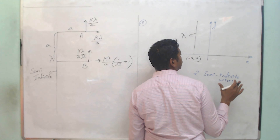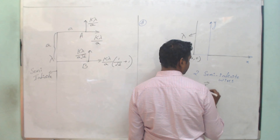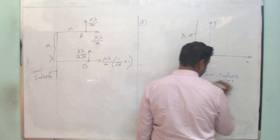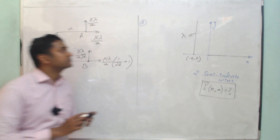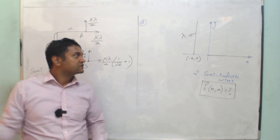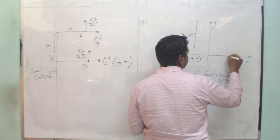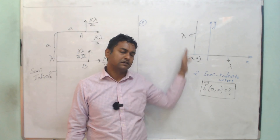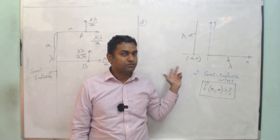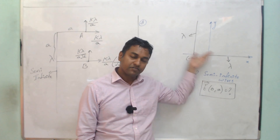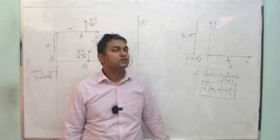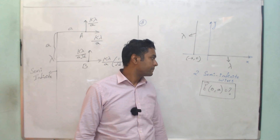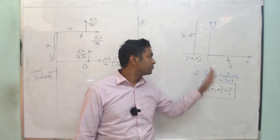Now, question number eight. Let us take an x-axis and y-axis. Two semi-infinite wires are placed as shown in the figure. The first semi-infinite wire is parallel to the y-axis, starting from the point (−a, 0) and extending parallel to the y-axis.